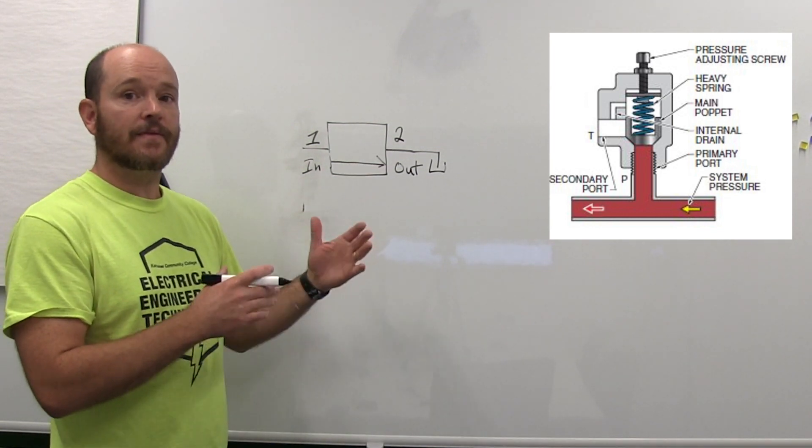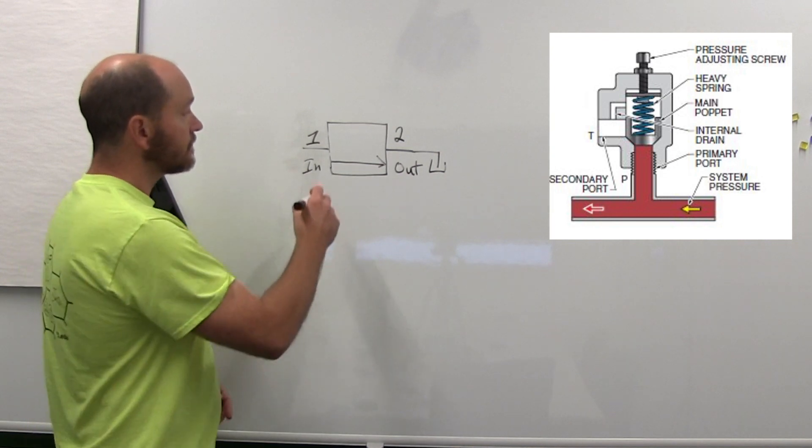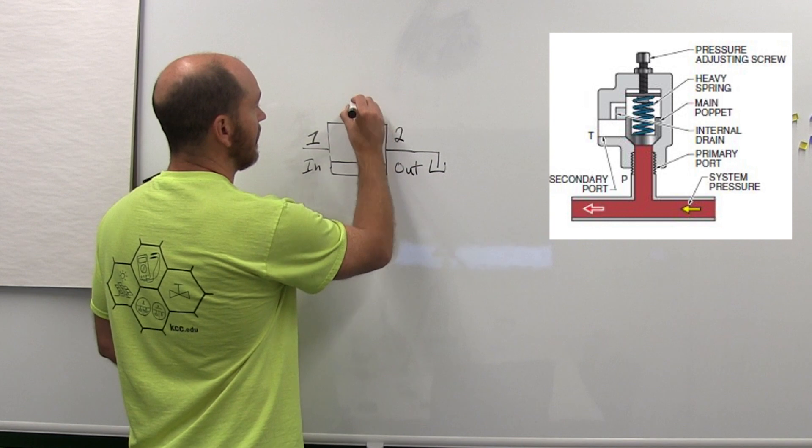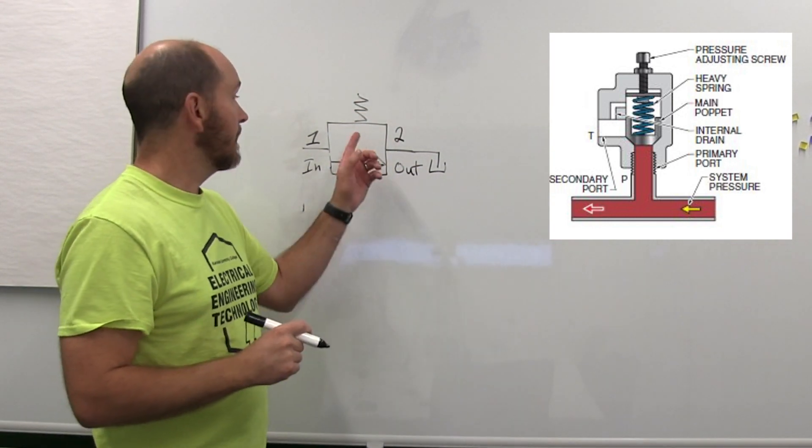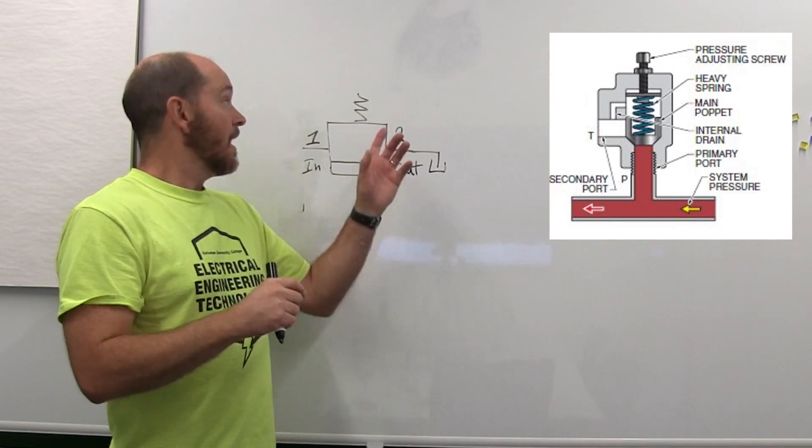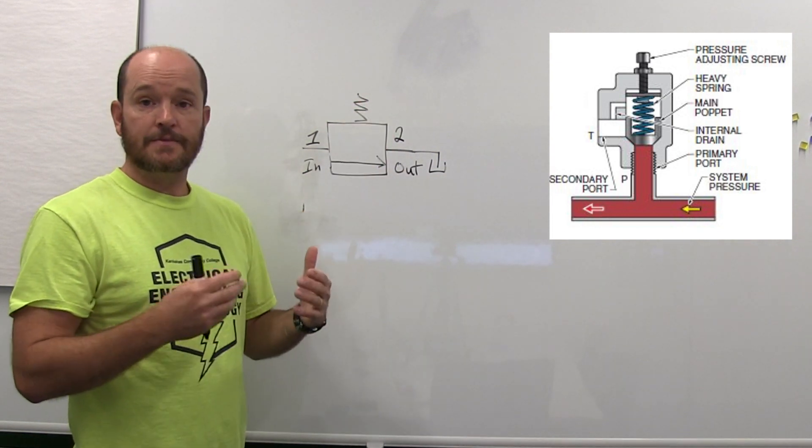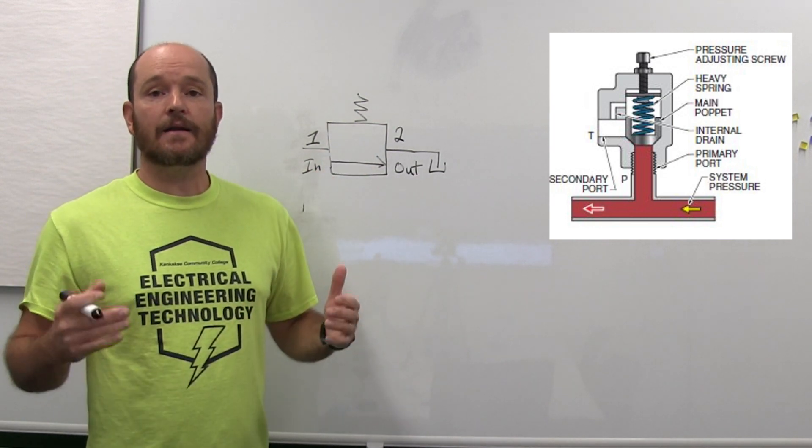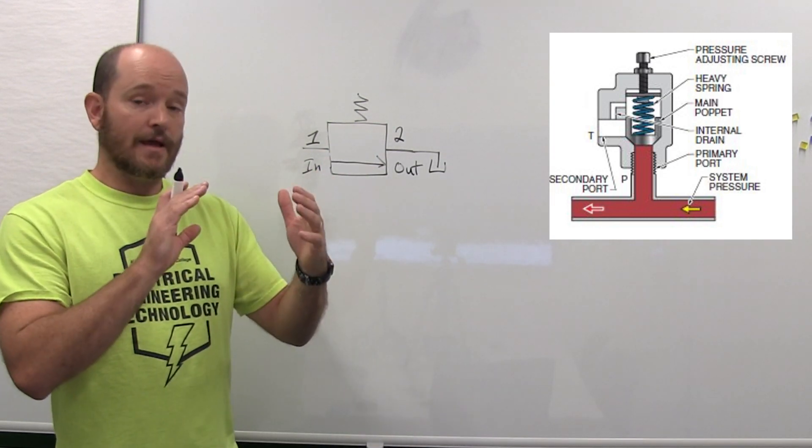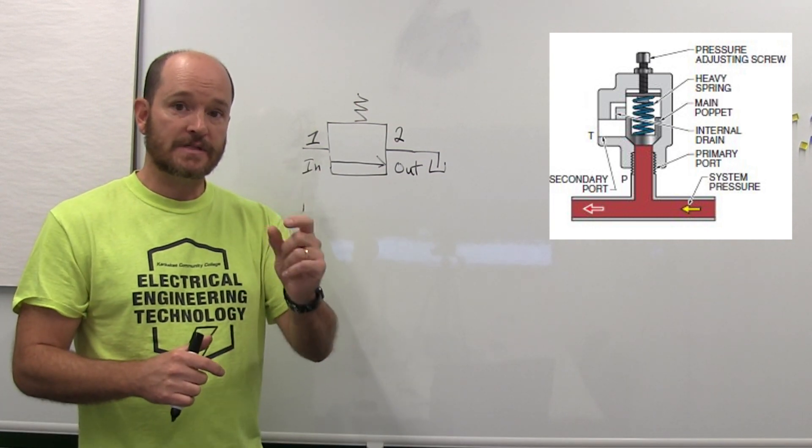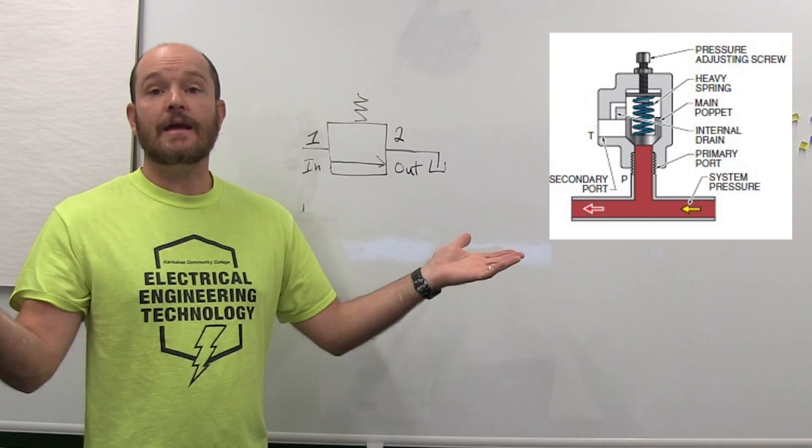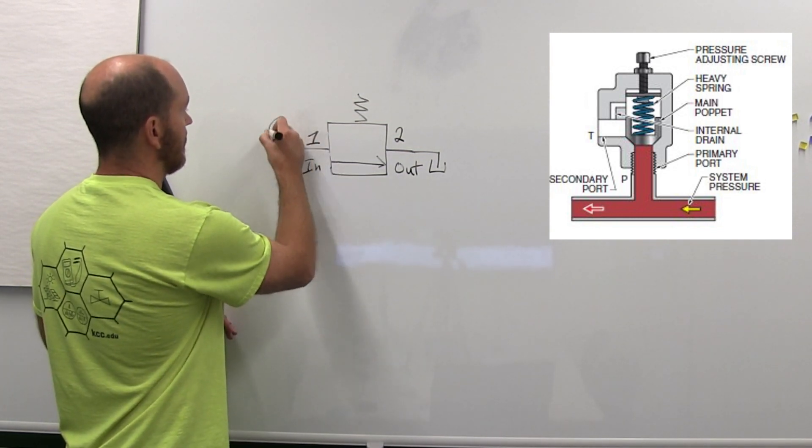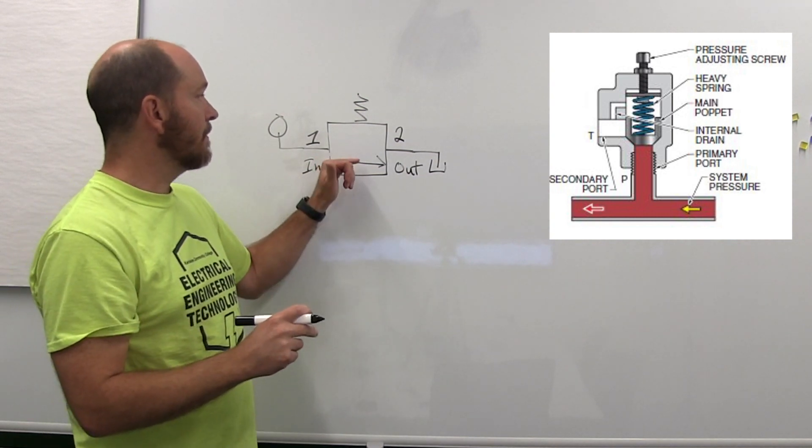The biasing spring is located on the top here. Sometimes there will be an arrow through it, sometimes there won't be. If there is not an arrow through it that means it is not adjustable—you've purchased it to open at a very specific pressure, let's just say 800 psi for example.